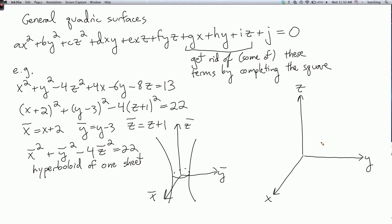And they're centered at the point where x equals minus 2, that's where x bar equals 0, and y bar equals 0 which means that y equals 3, and z bar equals 0 which means that z equals minus 1. So in the x, y, and z axes, we get a hyperbolic paraboloid which is translated from the standard one, and it's centered around this point, minus 2 comma 3 comma minus 1.